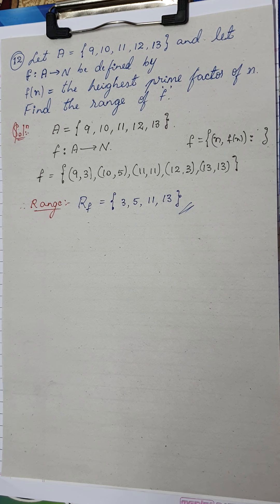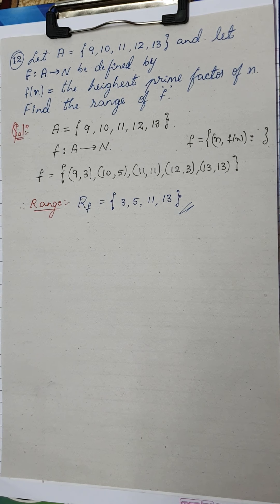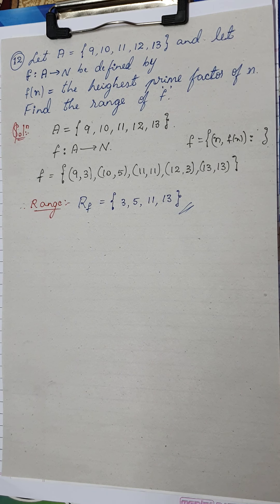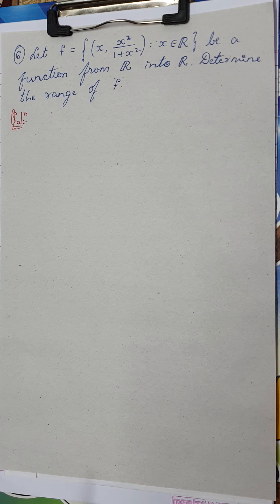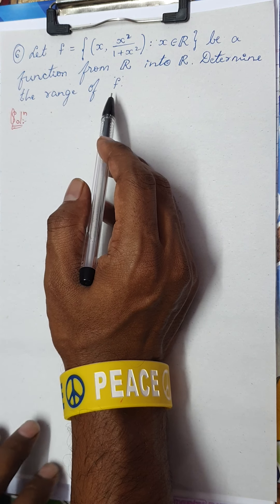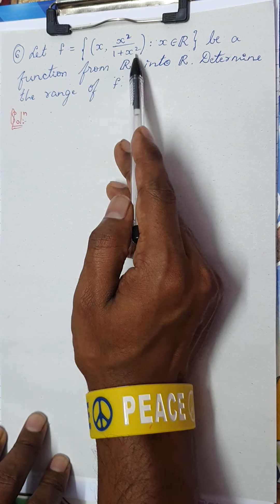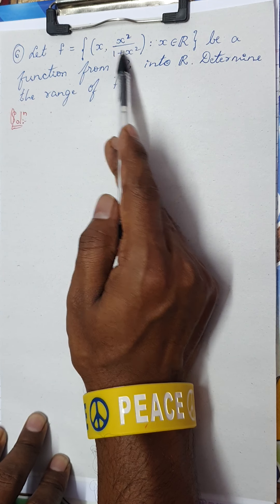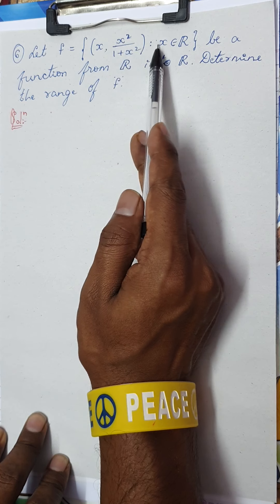Questions 9 and 11 are left as homework — they are quite simple. Now for the last and most challenging question, number 6: let f = {(x, x²/(1+x²)) : x ∈ ℝ} be a function from ℝ into ℝ. Determine the range of f.